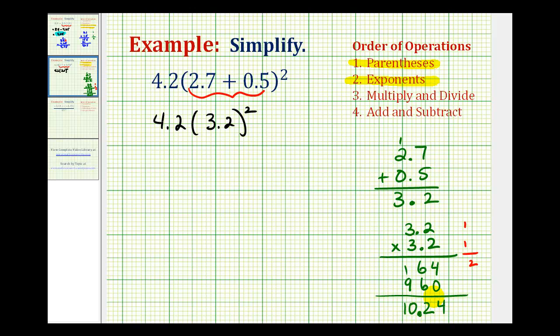And that should make sense because we know that 3 times 3 is equal to 9, so 3.2 times 3.2 should be a little bit more than 9. So 10.24 does seem reasonable for this product.